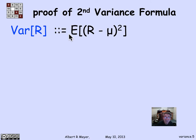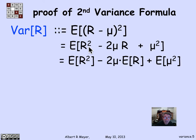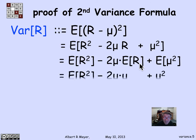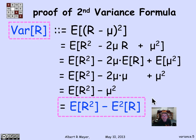The variance of R, by definition, is the expectation of (R minus mu) squared. Expanding, that's the expectation of R squared minus 2mu·R plus mu squared. Applying linearity, I get E[R²] minus 2mu·E[R] plus E[mu²]. The expectation of the constant mu squared is mu squared, and E[R] is mu. So I get E[R²] minus 2mu² plus mu², which simplifies to E[R²] minus mu squared — that is, E[R²] minus (E[R])². The first rule about factoring out a and squaring follows from a similar proof.